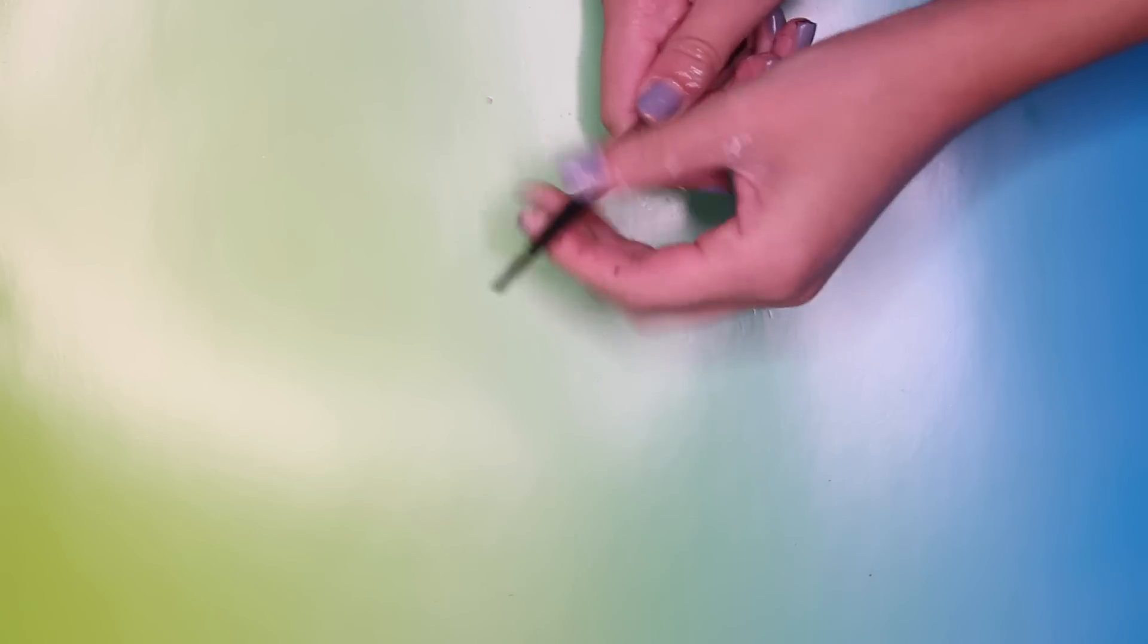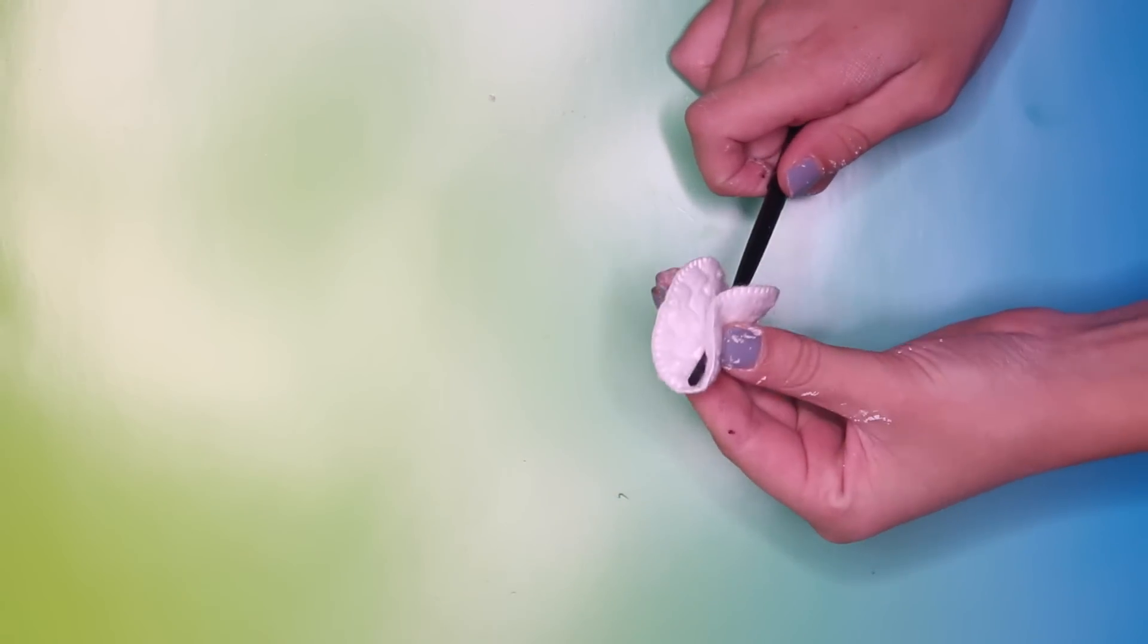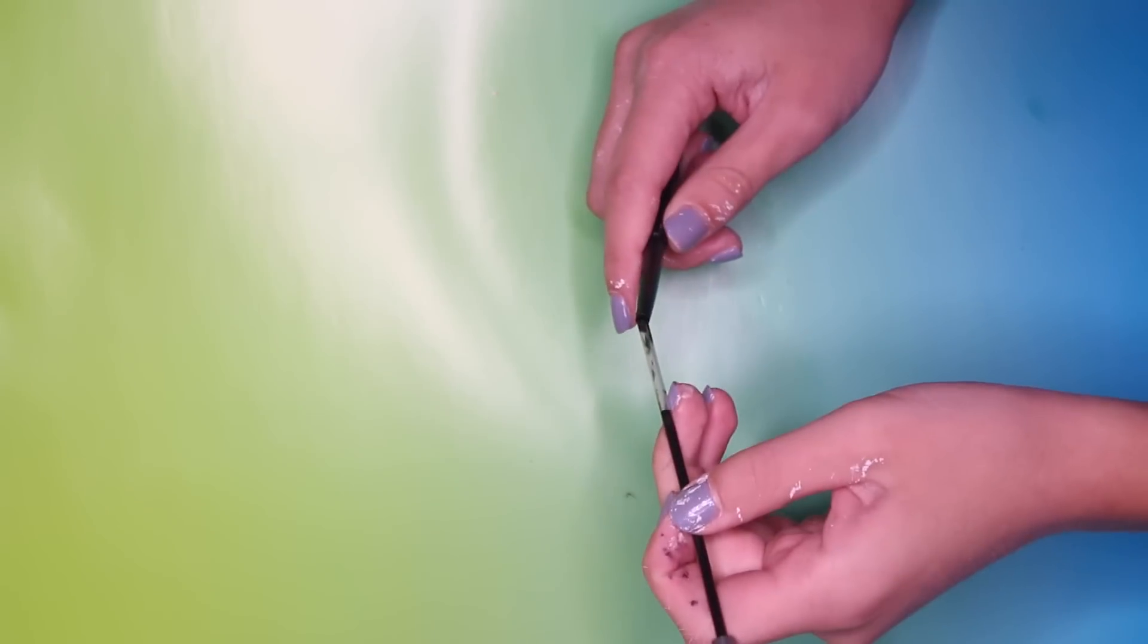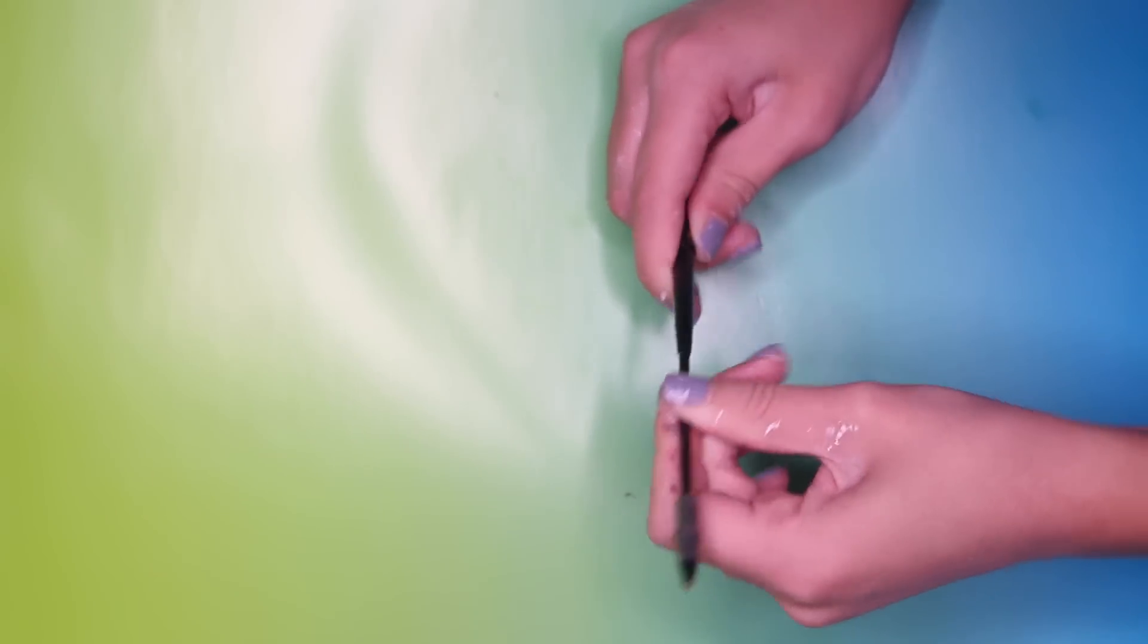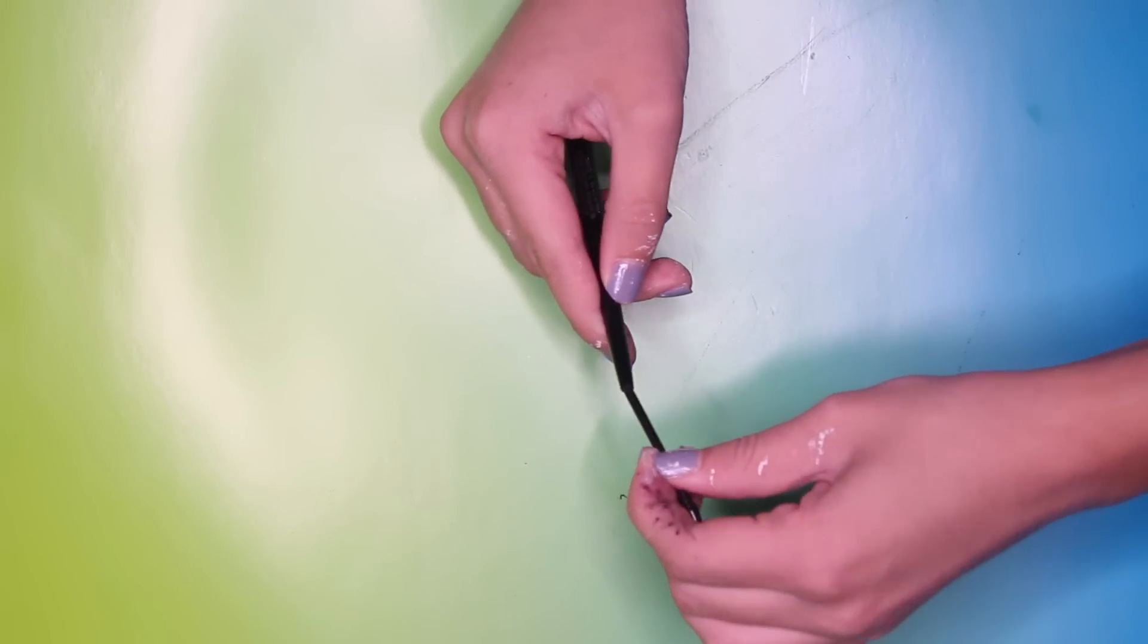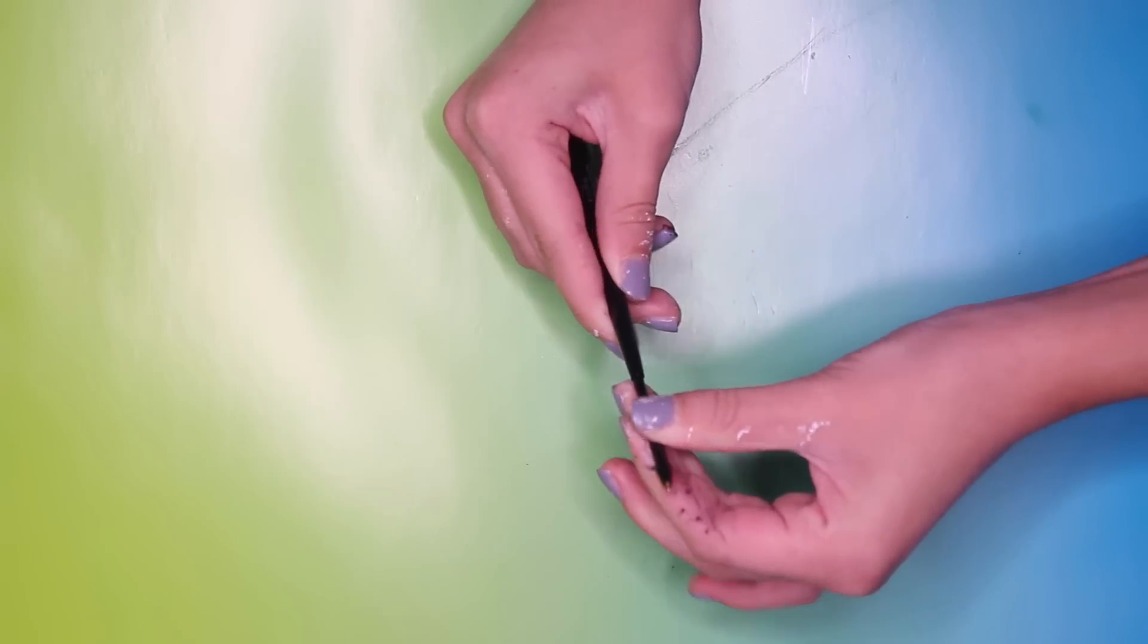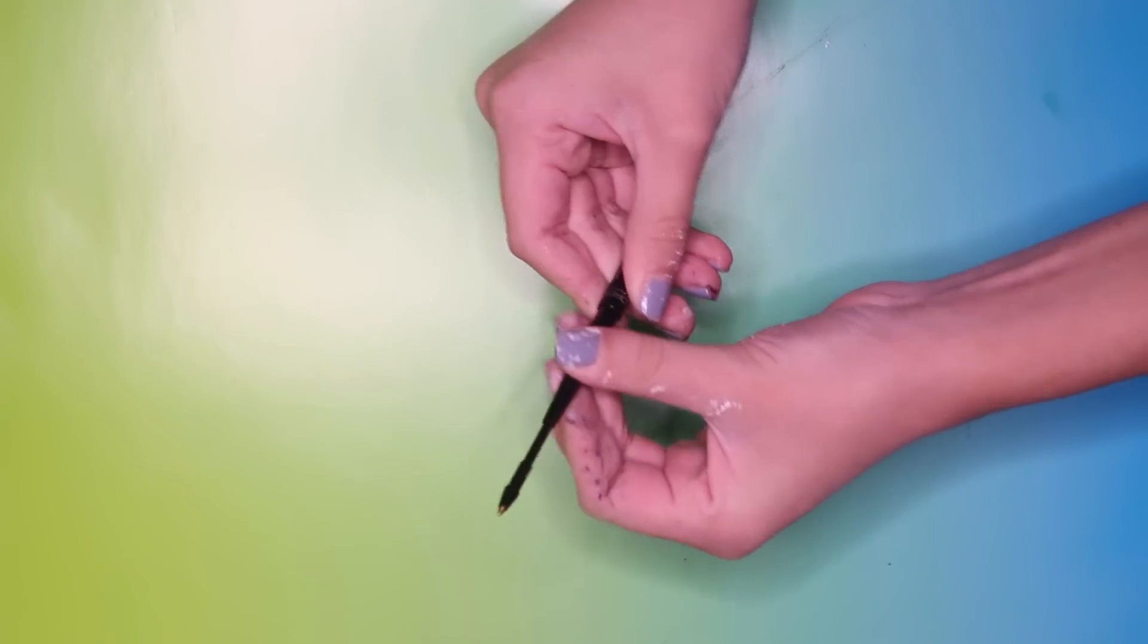For the eyeliner pen, the first thing I did was take out the eyeliner. I just bought a really, really cheap eyeliner. If you're going to do this, buy something cheap because I don't want you guys wasting or ruining an expensive eyeliner. And then I took the ink cartridge out of a pen and trimmed it so that it would fit into the eyeliner tube.